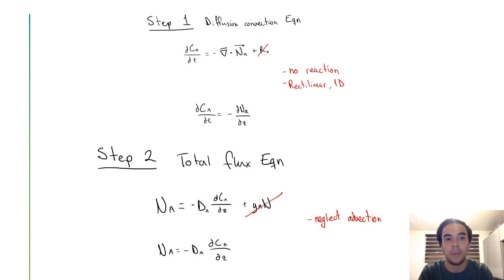Step 2, the total flux equation. We neglect the advection that is bulk motion in the system. Since we don't have that here we can neglect it.